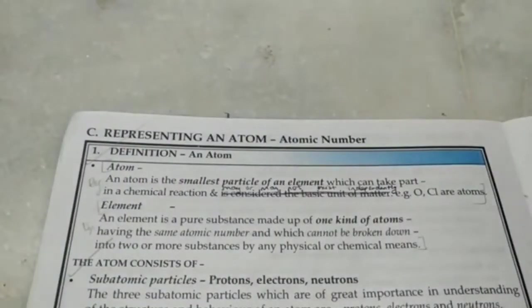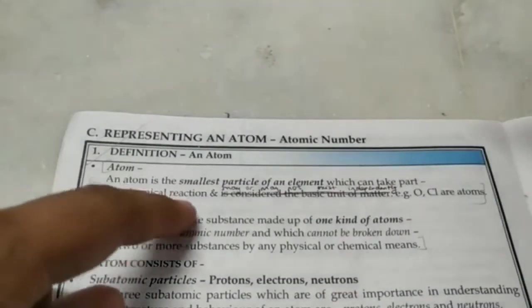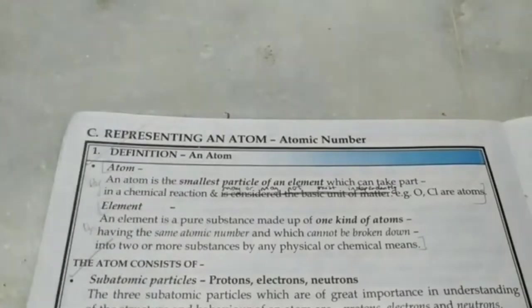Let's study 9th Standard ICSE Chemistry Chapter 4, Atomic Structure and Chemical Bonding. An atom is the smallest particle of an element which can take part in a chemical reaction, and it may or may not exist independently.